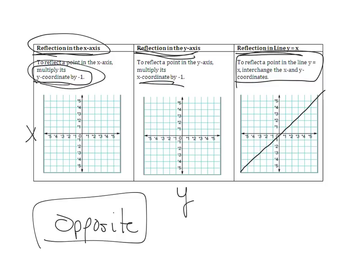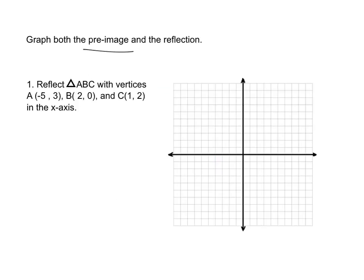So x-axis, y-coordinate by negative 1. Y-axis, x-coordinate by negative 1. Y equals x, reflected. So, pre-image and the reflection. I'm going to zoom in a little bit.